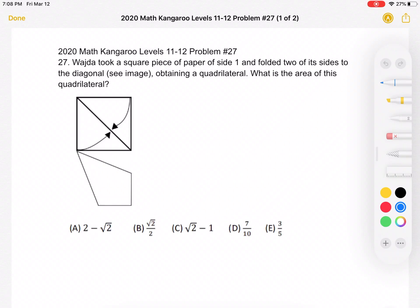This is the 2020 Math Kangaroo Levels 11-12 Problem No. 27. Wajda took a square piece of paper of side 1 and folded two of its sides to the diagonal, as shown in the image below, obtaining a quadrilateral. What is the area of this quadrilateral?